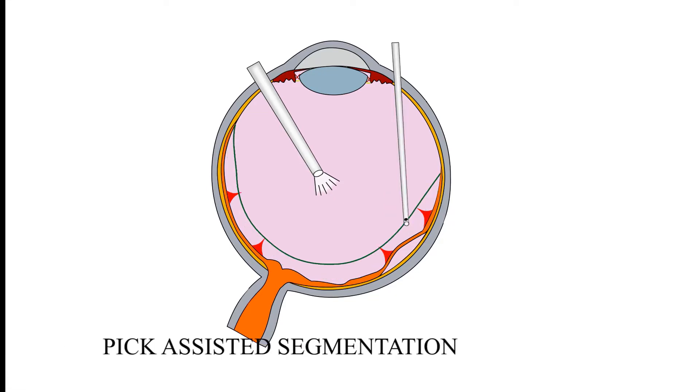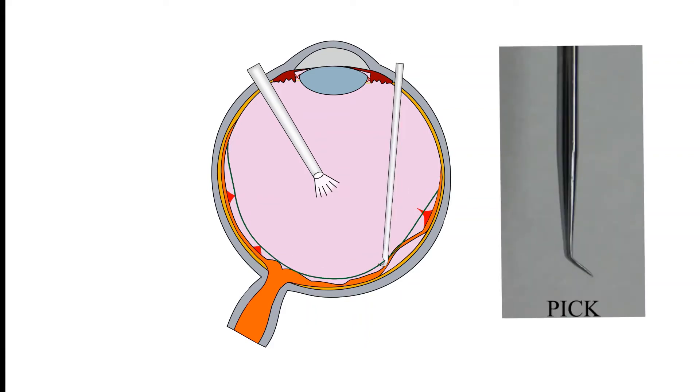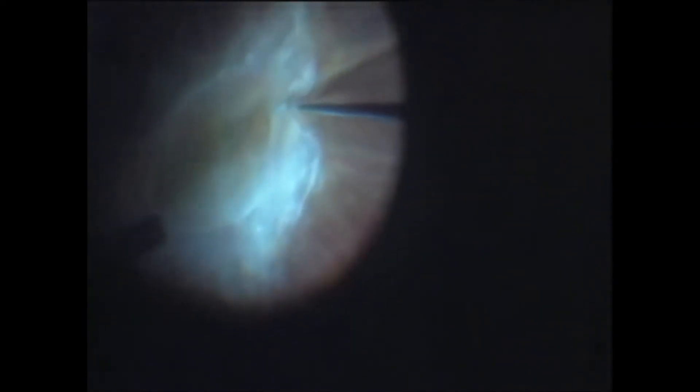In certain cases, when there is no plane available for dissection between fibrovascular membrane and retina, a pick can be used to find a cleavage plane for the vertical scissors or vitrectomy probe. In this video, finding a dissection plane was difficult with a probe. A pick was used to find a cleavage plane between fibrovascular membrane and retina.